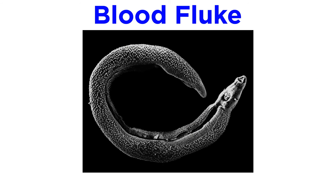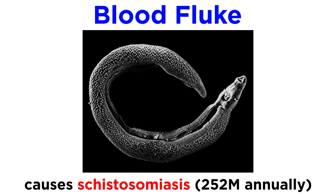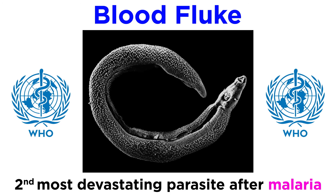Another clade of trematodes, the blood flukes, cause a disease known as schistosomiasis, which infects more than 252 million people globally and leads to thousands or even hundreds of thousands of annual deaths. They are considered by the World Health Organization to be the second most socioeconomically devastating parasitic disease after malaria.